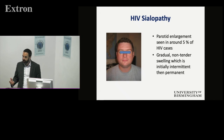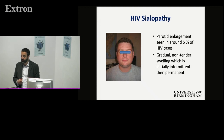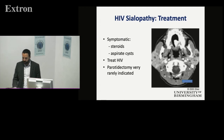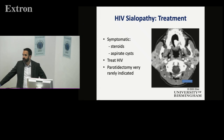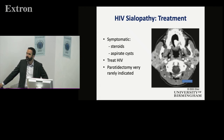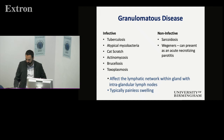With regards to other infections — HIV: a small number of patients with HIV will get parotid enlargement, usually non-tender, which gradually progresses and doesn't tend to go down after the intermittent phase. If they've got a cystic parotid swelling, you can aspirate it, give them steroids, and make sure they're being seen by the appropriate infectious diseases or HIV team. You really shouldn't need to operate on these patients — it's a bilateral progressive condition, and operating opens you up to potentially more complications.